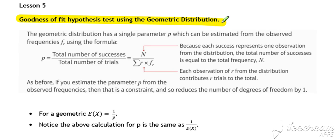So firstly, if we want to estimate P for a geometric, we can use this formula, but probably more easily just appreciate that the expected value of X for a geometric is 1 over P. Therefore, P is the same as 1 over the expected value of X. So if we just work out the mean of our observed frequencies and invert it, then that will give us our estimate for the P for a geometric.